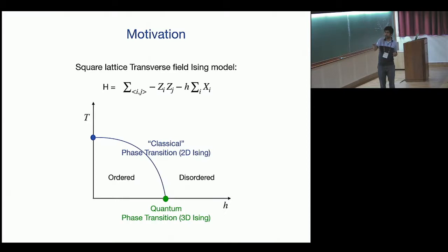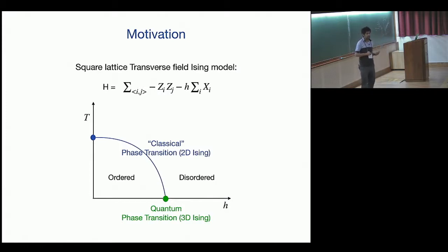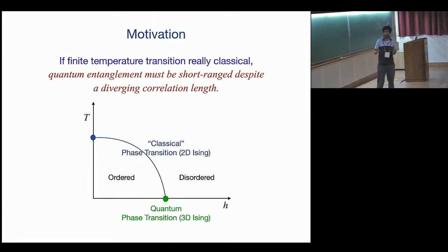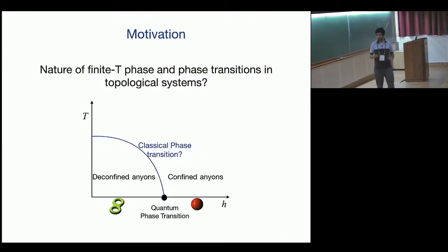When you set H to 0, that's the Onsager critical point—it has the same universality. So it's reasonable to call this classical. The criteria I will pose is: I will call a transition classical if the quantum entanglement is short-ranged even at the phase transition. If there is no long-range entanglement, it makes sense to call it classical, because entanglement is what makes quantum mechanics special.